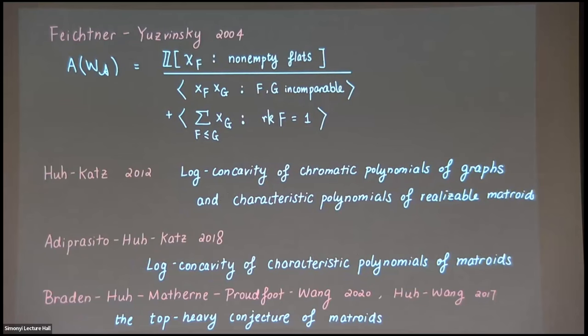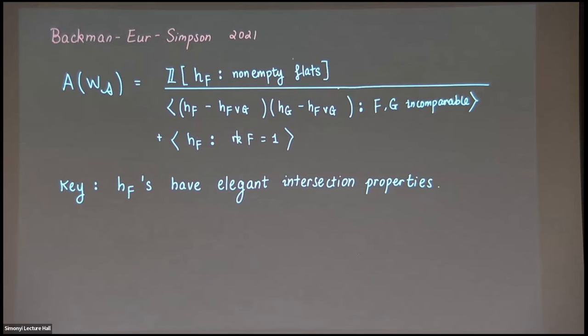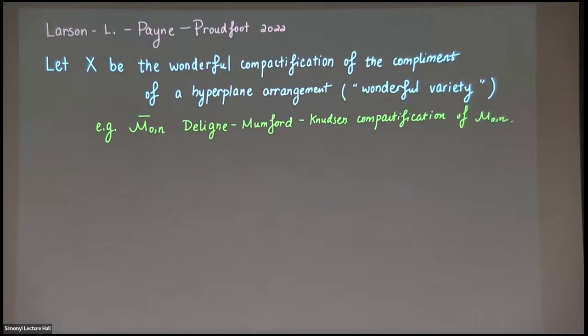For our purposes, to state the main result, we use a change-of-variables presentation of our Chow ring. Instead of generators X_F as before, I introduce new generators H_F, still in bijection with all the flats. The key point is that these H_F have extremely elegant intersection properties — they are either one or zero depending on combinatorial properties of the underlying matroid. This is work of Backman, Eur, and Simpson. Now we are ready to state our replacement of the Chern character.